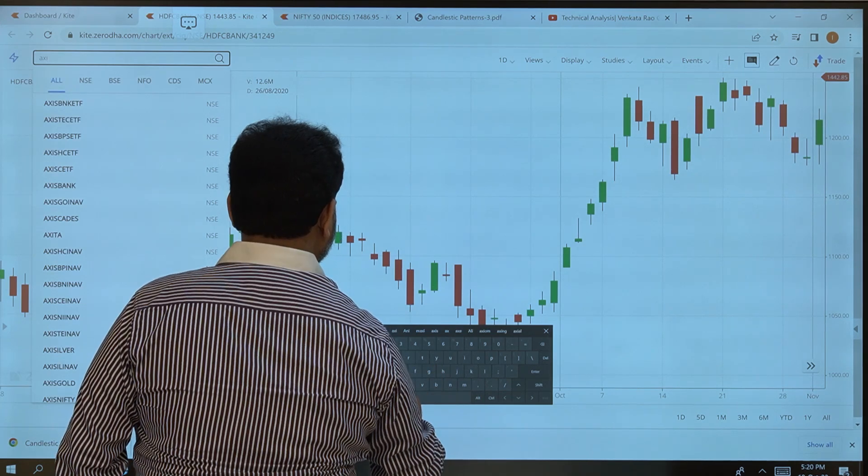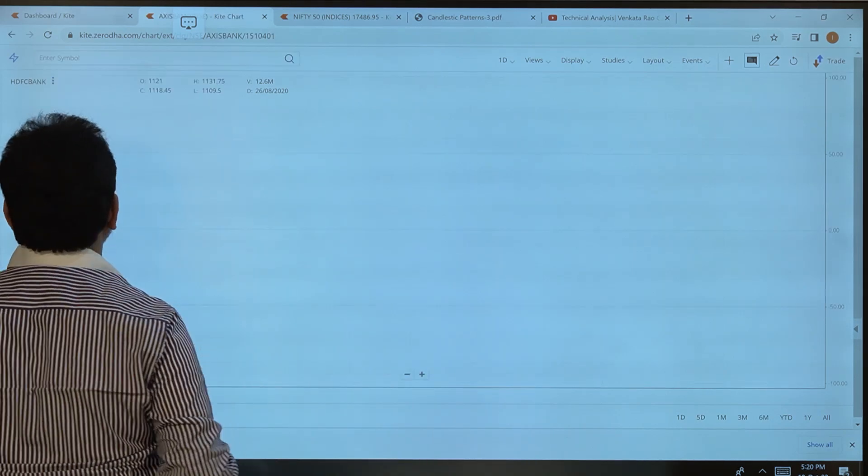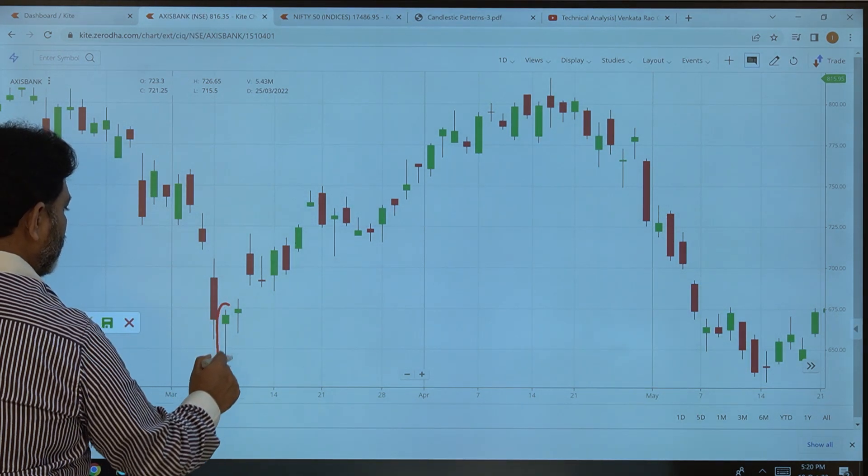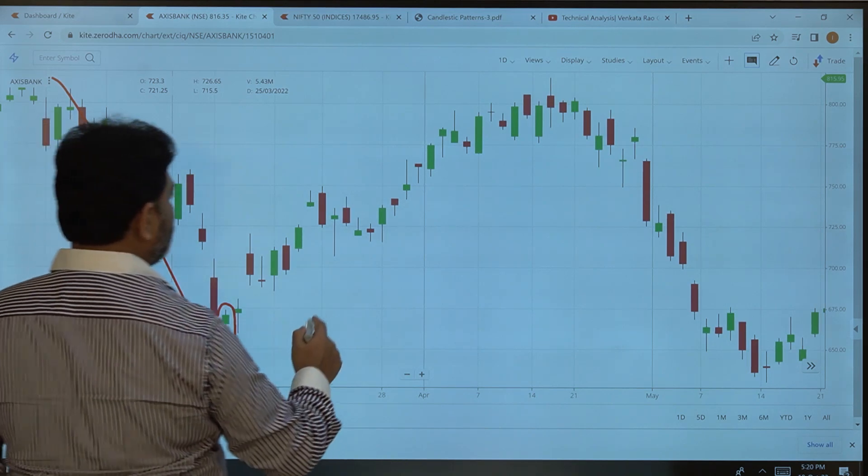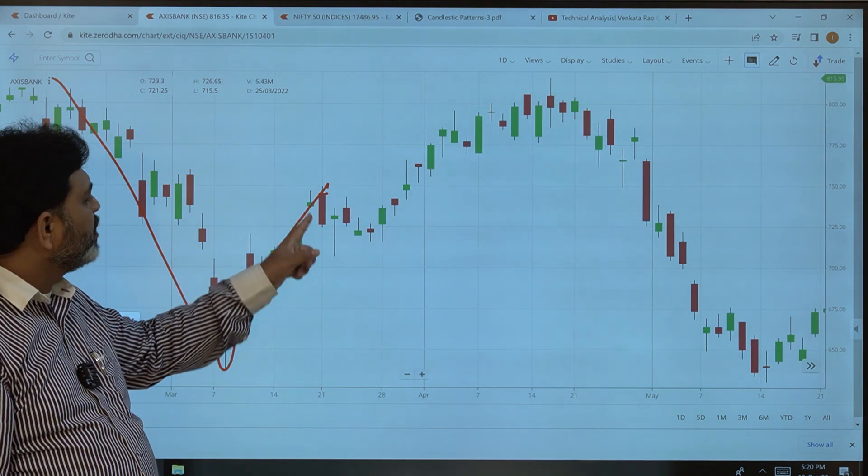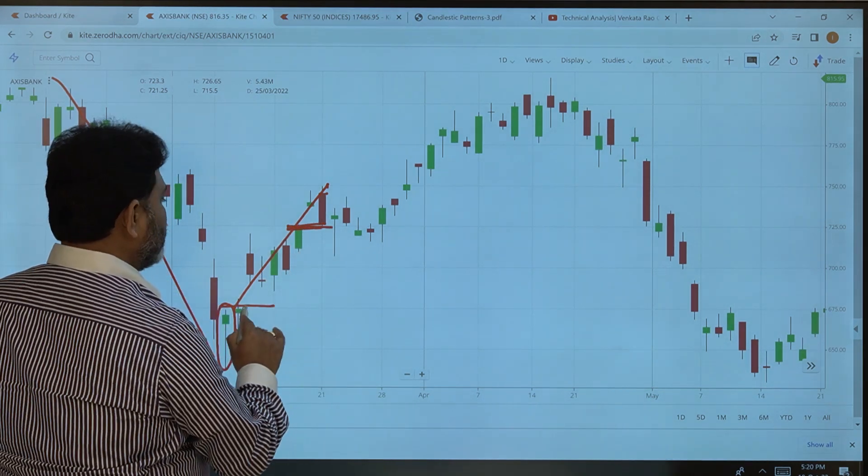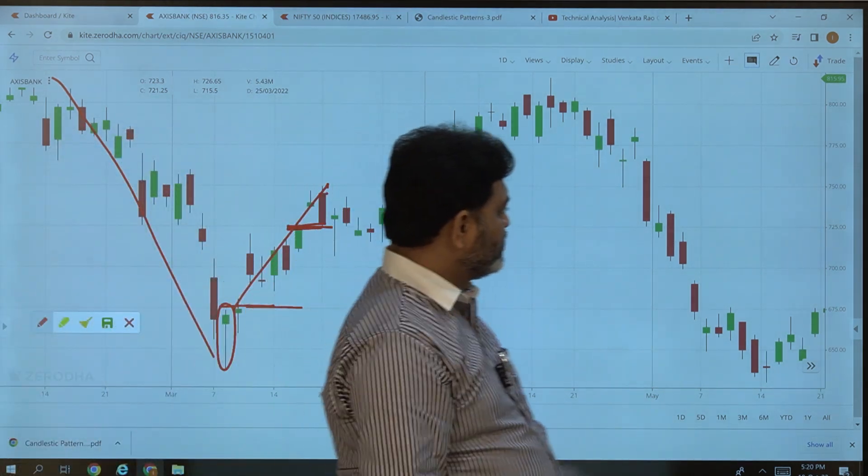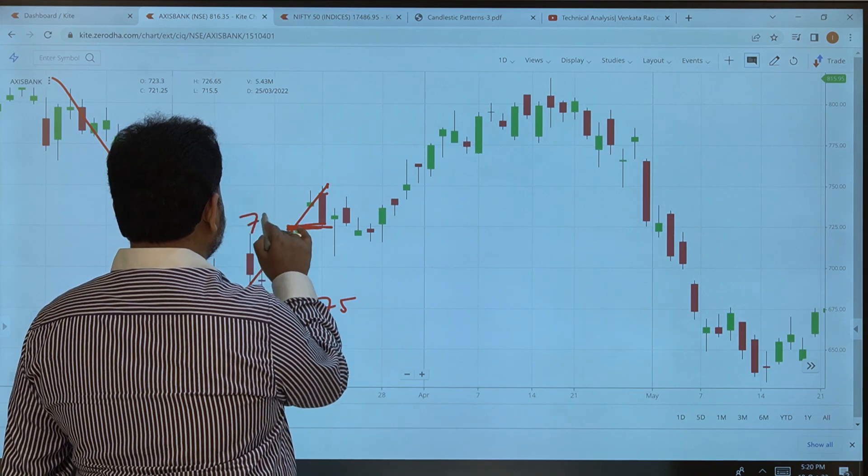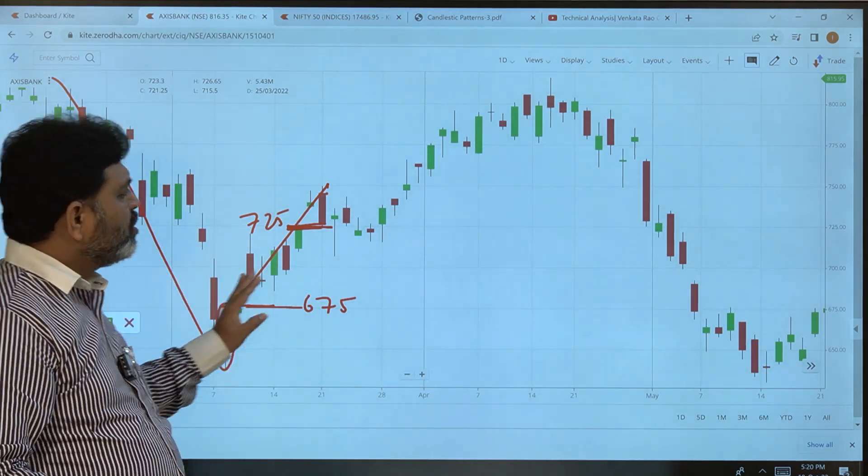Another example is Axis Bank. Here is a perfect hammer in a downtrend. This length is easy to see. At least in this length, we can book profits here at entry. Somewhere from 675 to 725 - 50 points we can book as profit. This is a hammer example.